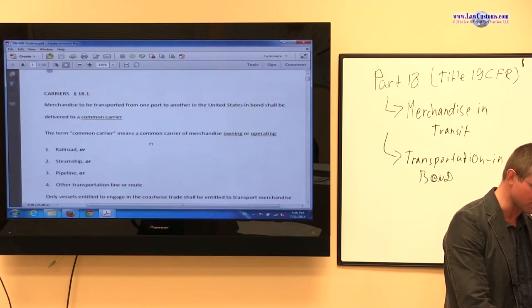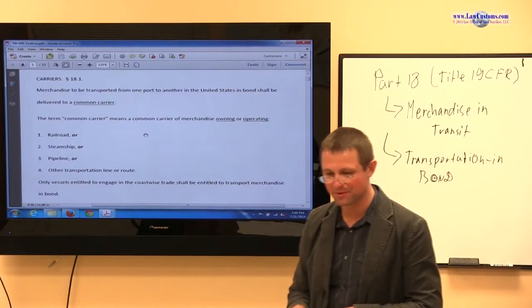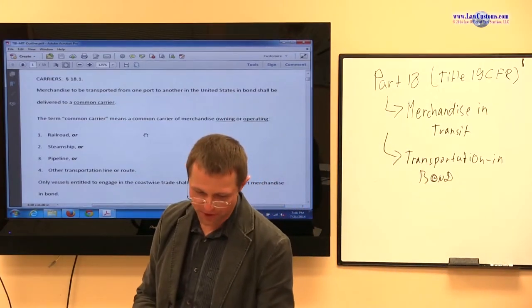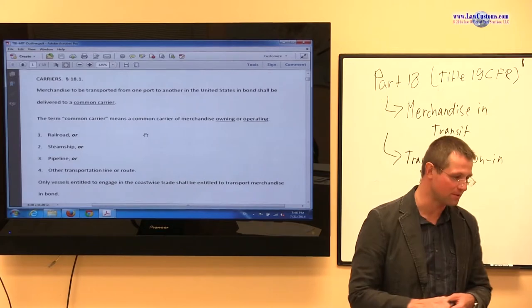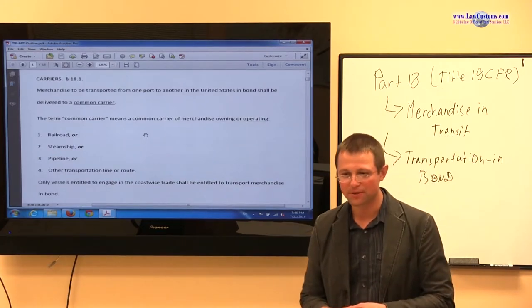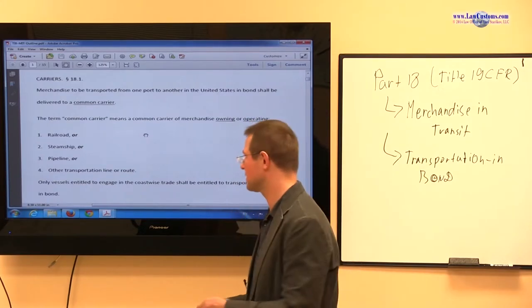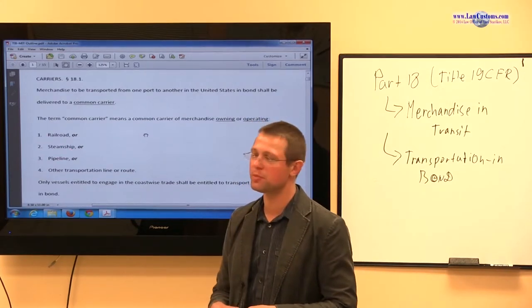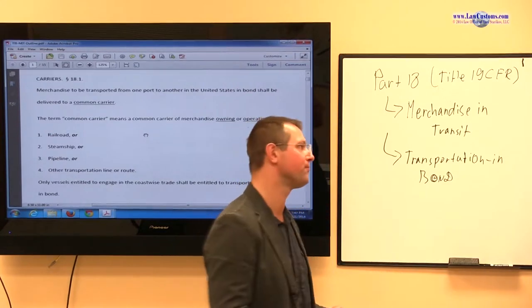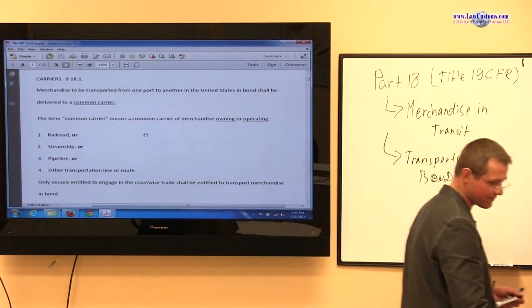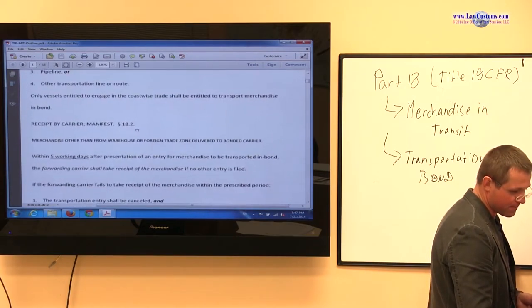So what are these rules? Before we dive into the rules, we have to talk about definitions so we start off on the same page. Those definitions include the common carrier. Common carrier is a fancy word for the mode of transportation. Transportation can be done by railroad, by ship, by pipeline, or by truck.